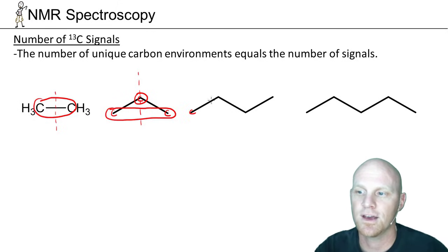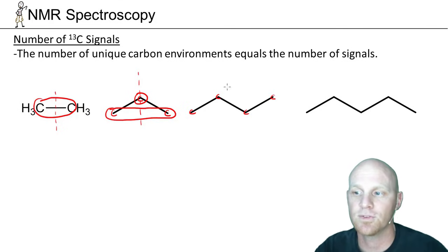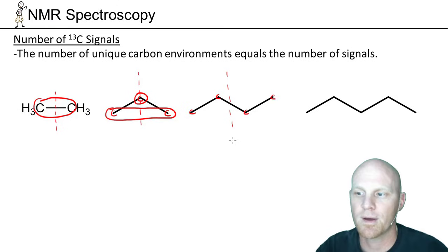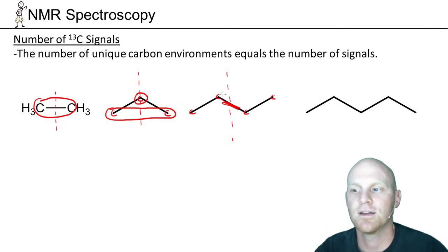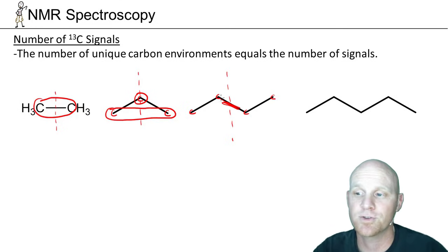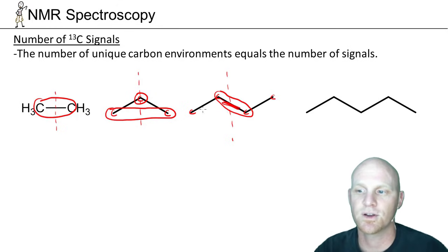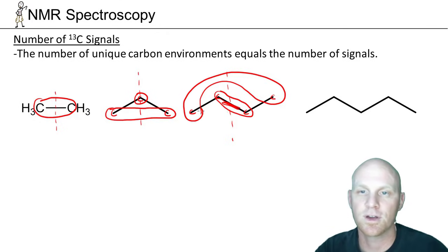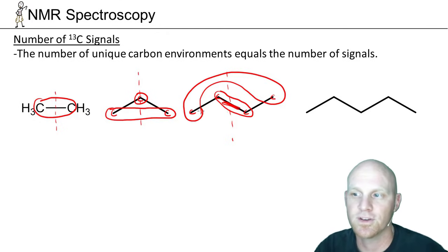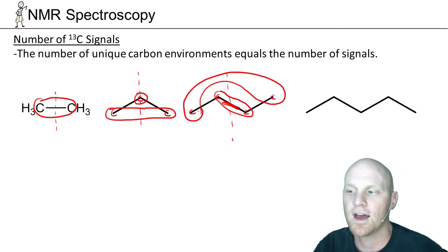Looking at butane, which has four carbons, it turns out it's also only going to have two signals. There is symmetry right down the middle. Keep in mind that the central bond is a single bond and it's free to rotate, and as it rotates there's definitely symmetry there. These two end carbons are chemically equivalent and give rise to a single signal, and these two inner carbons are chemically equivalent and give rise to a single signal. So butane also has only two signals.